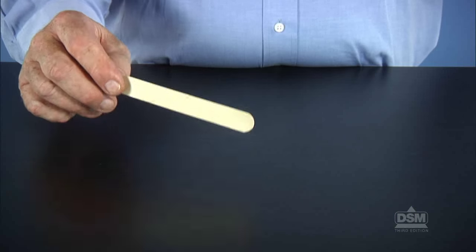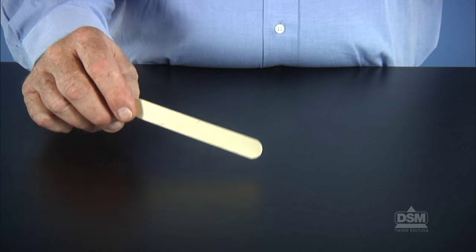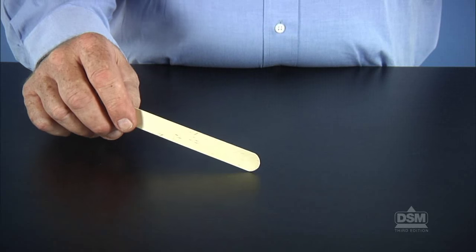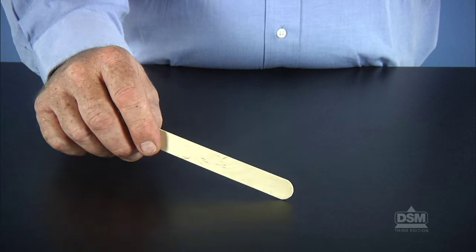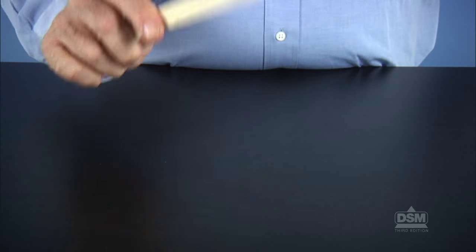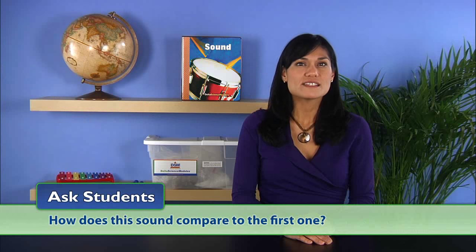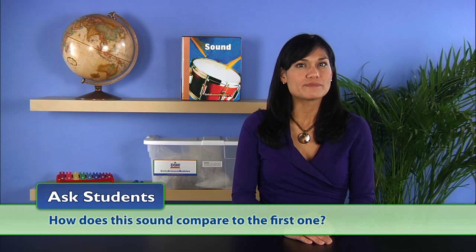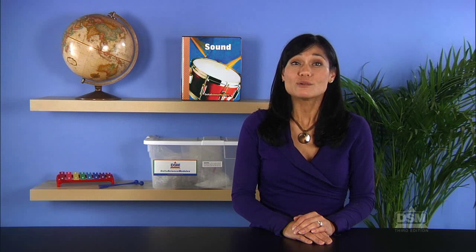Next, give each student a tongue depressor. Instruct them to tap lightly on a desk or chair with the tongue depressor. They should hear a soft sound. Then tell the students to tap hard on the desk or chair with the tongue depressor. Then ask students, how does this sound compare to the first one? The second sound was louder.